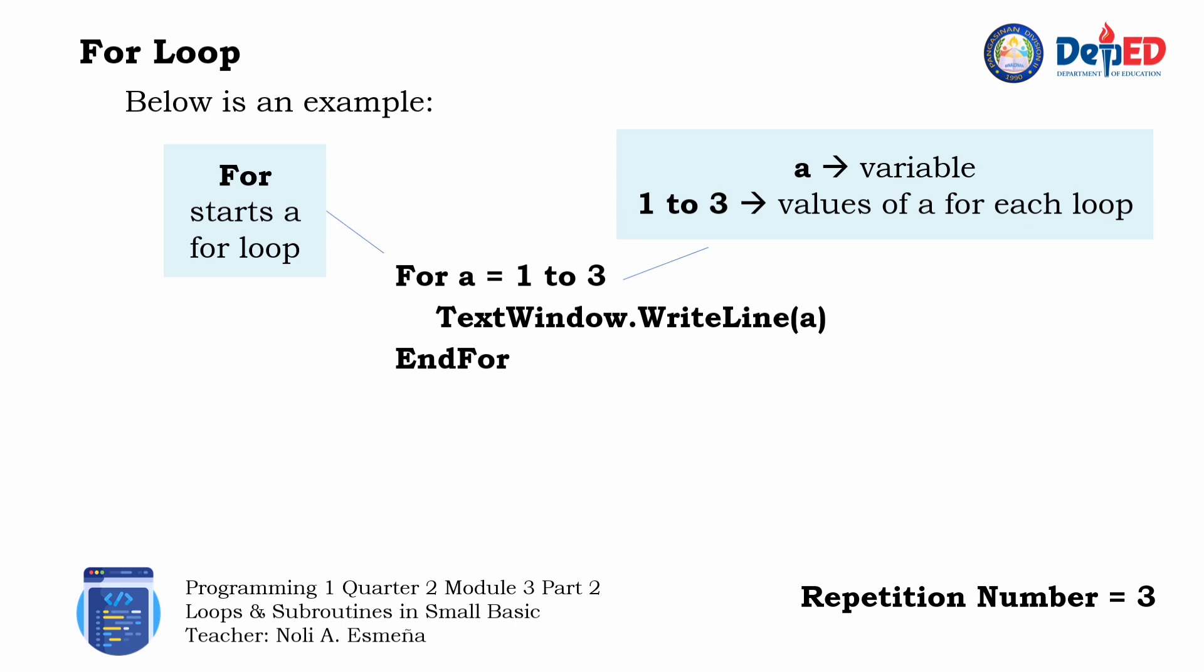This means that the loop will be repeated three times. The next line of code describes what will happen on each loop, which in this case is to write or display the value of a on each loop. And the end for keyword is used to end the for loop.